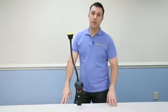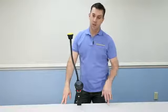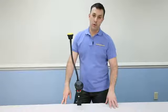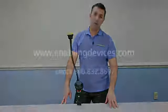Our 5015 announcer with six levels on our gooseneck mounting system. You can purchase this item through our catalog or through our phone sales at 1-800-832-8697. And on our website, enablingdevices.com. Hope you enjoyed the video. Thanks for watching.